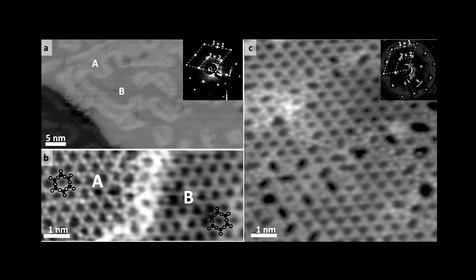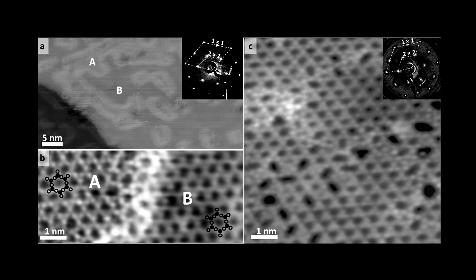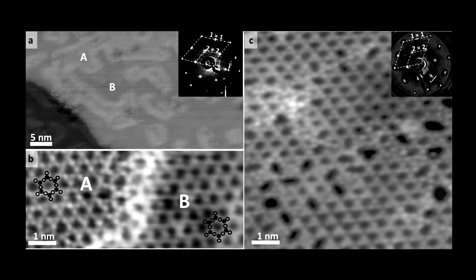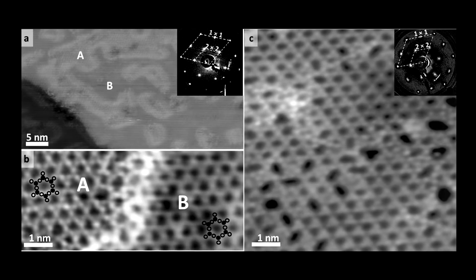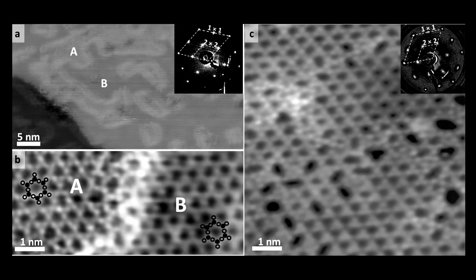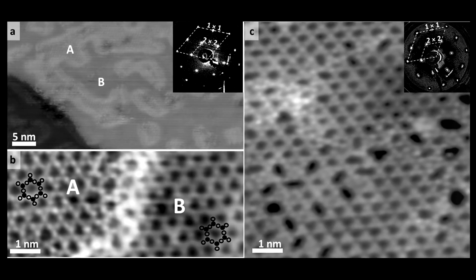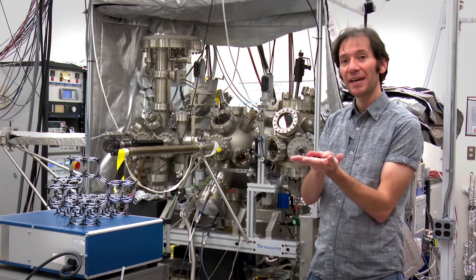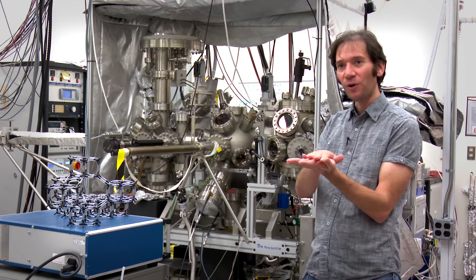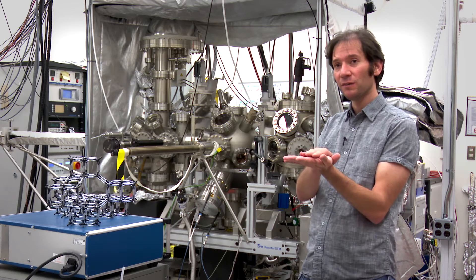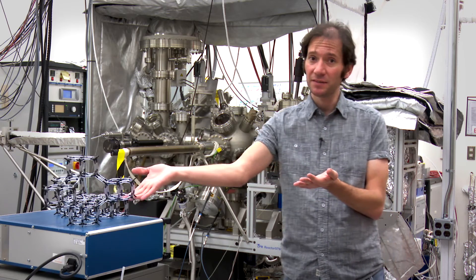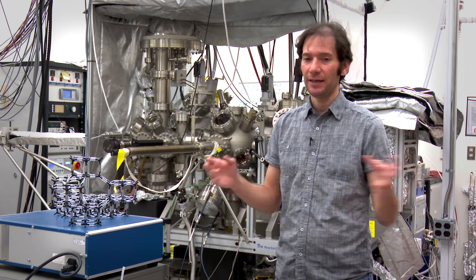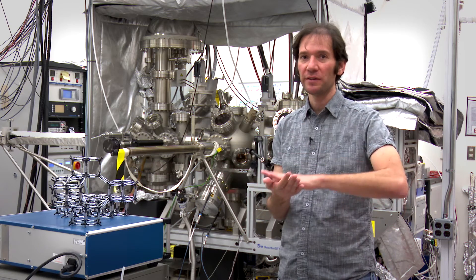While this gives us the imaging — the microscopy — we have the ambient pressure X-ray photoelectron spectroscopy station at the light source, where we can follow the chemical state of all the species involved, including the catalyst and the molecules that are on the surface.